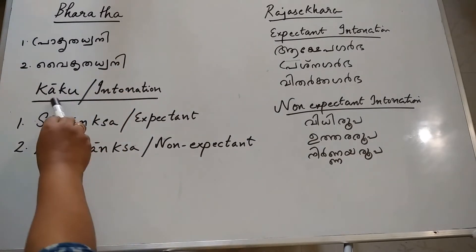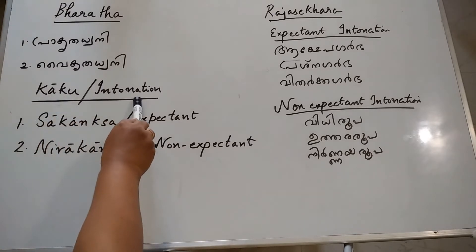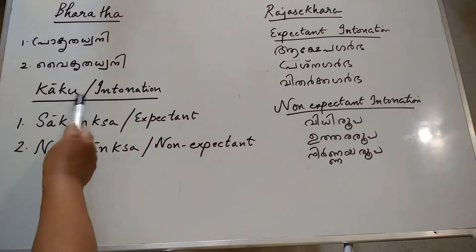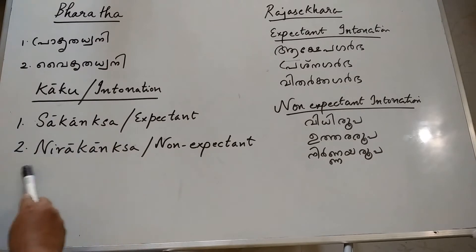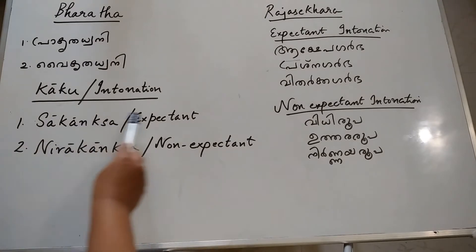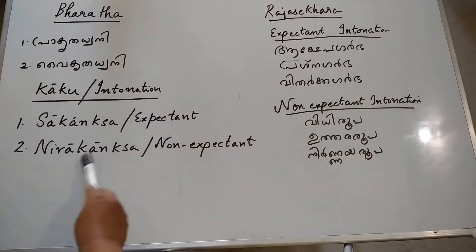Bharata used the term Kaaku to refer to intonation and he broadly classified Kaaku into two: Saagangshha and Niragangshha. Saagangshha is also known as expectant and Niragangshha is non-expectant.